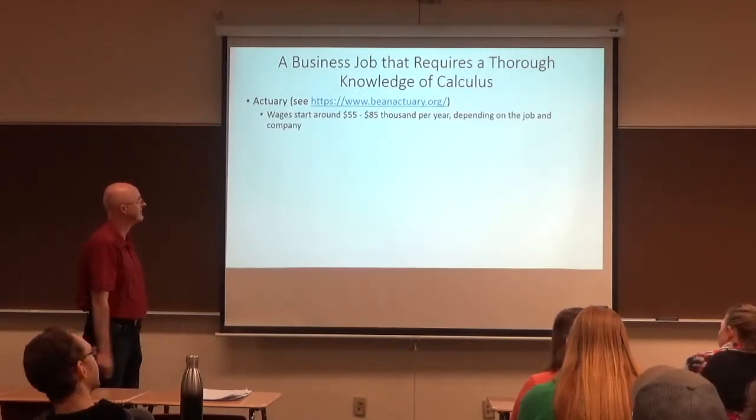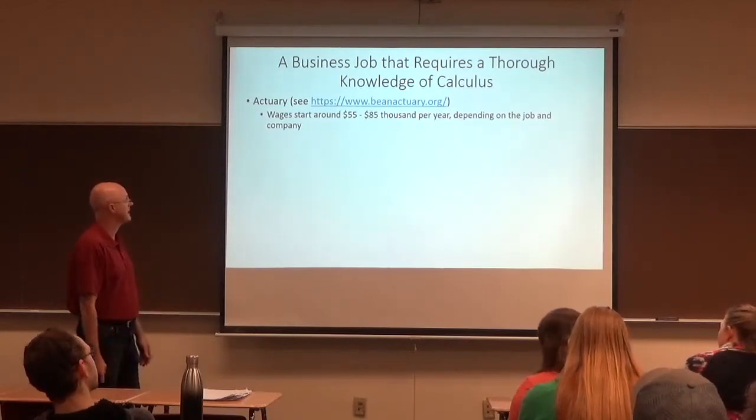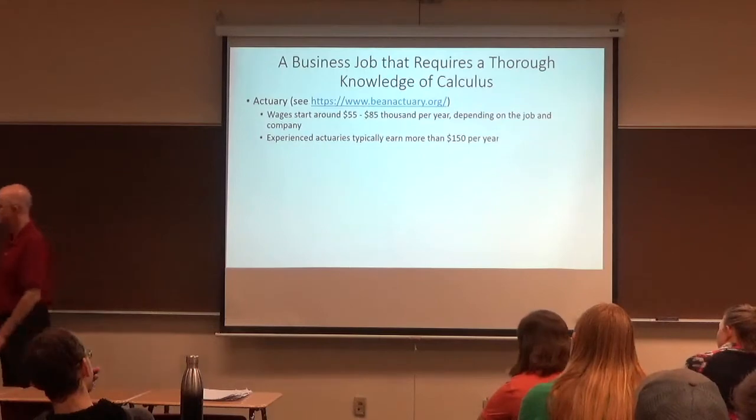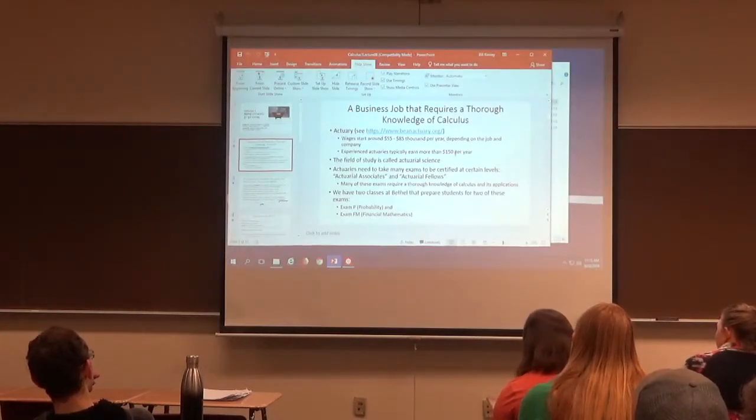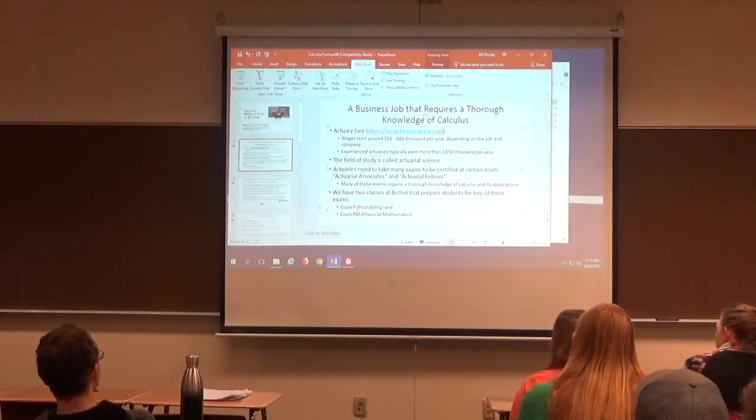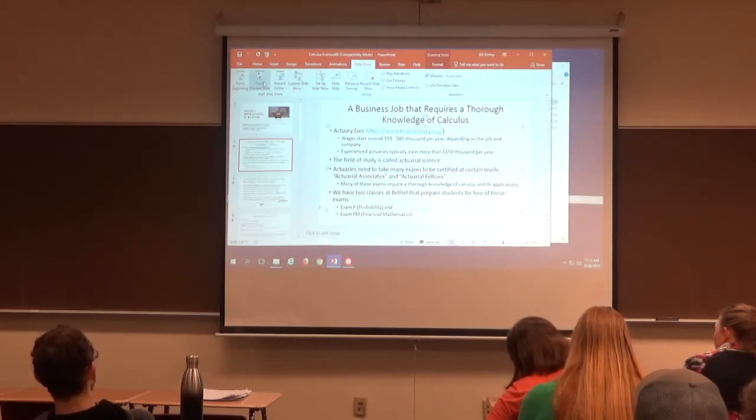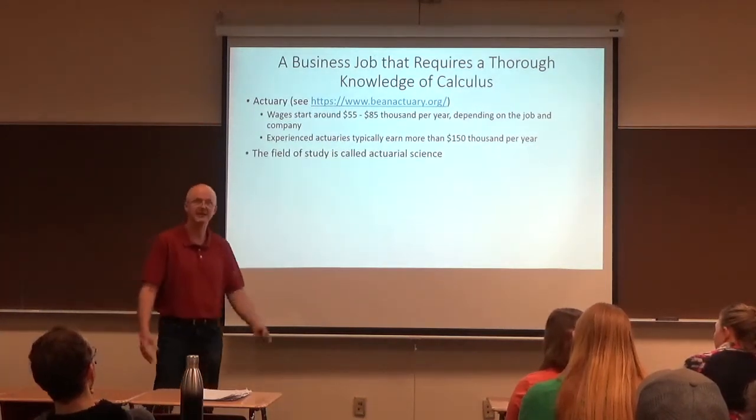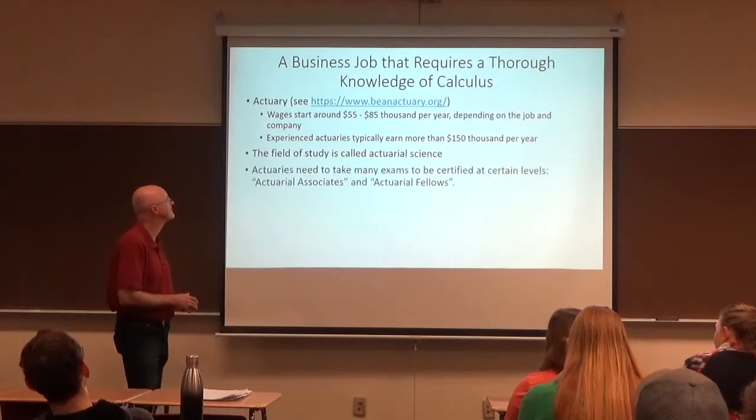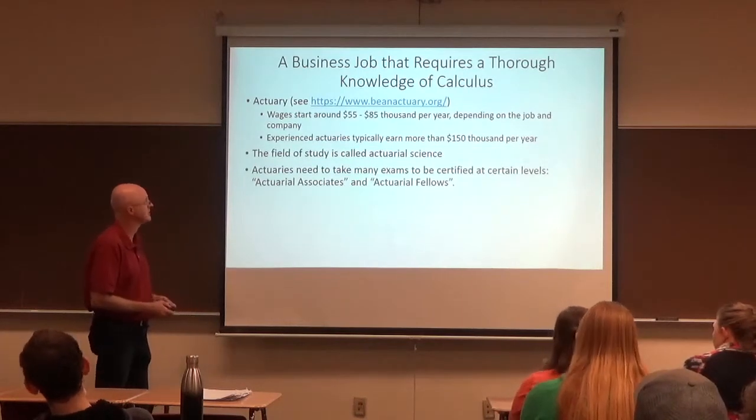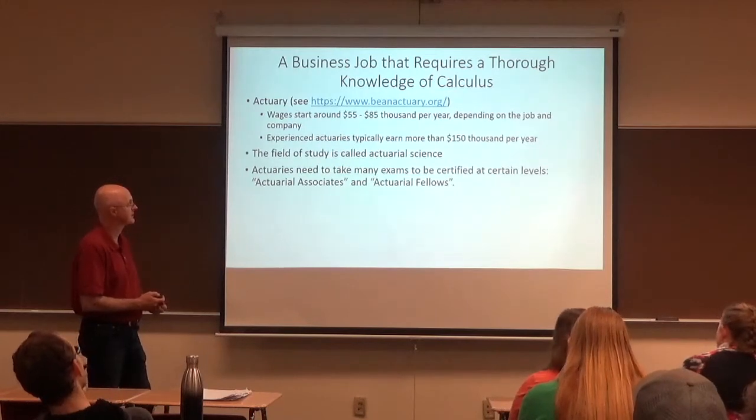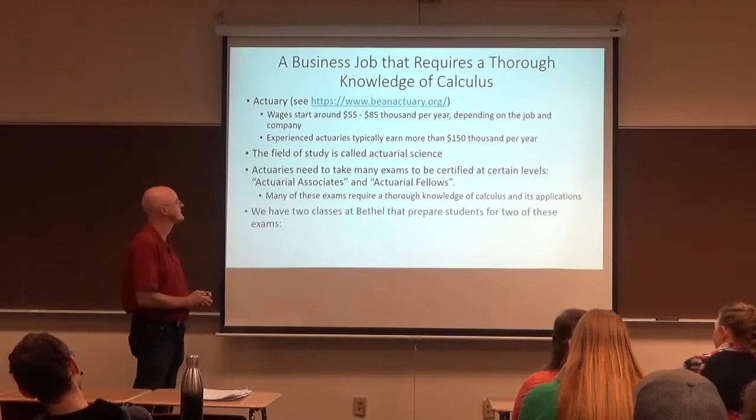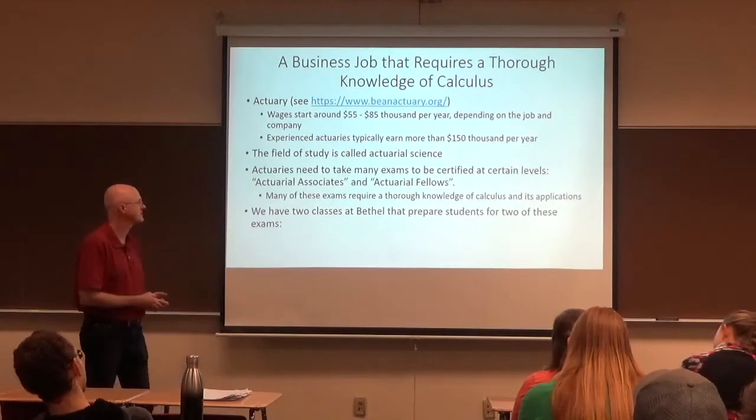Actuaries try to assess the chances of the fire in different areas. The wages are pretty good. They start around $55,000 to $85,000 per year in 2019, depending on the job and the company. Experienced actuaries typically earn more than $150,000 per year. That's not $150,000, that's $150,000. About $150,000 a year.